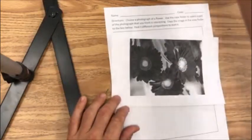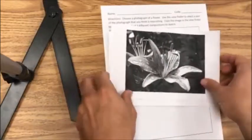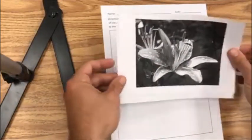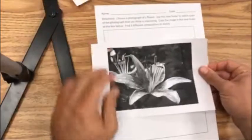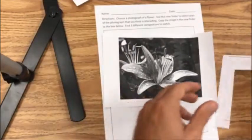First you're going to choose a flower that you'd like to draw. I think I like this one. Then I'm going to use my viewfinder.